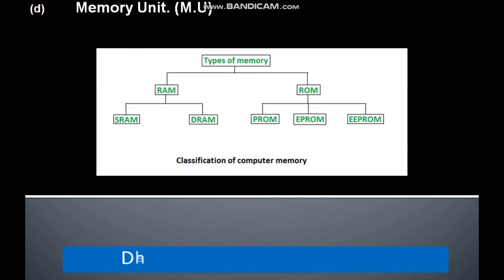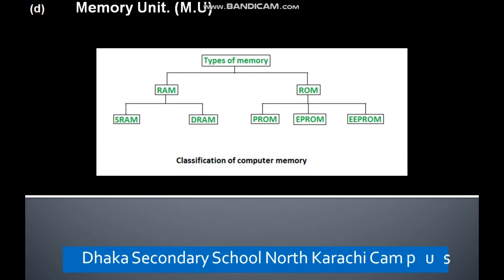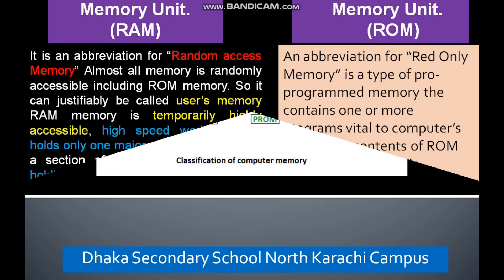This is a block diagram of the types of memory. RAM consists of SRAM and DRAM, and ROM consists of PROM, EPROM, and EEPROM.